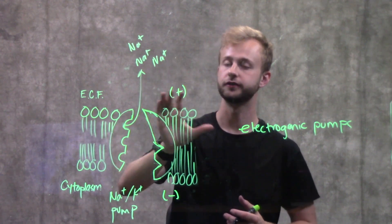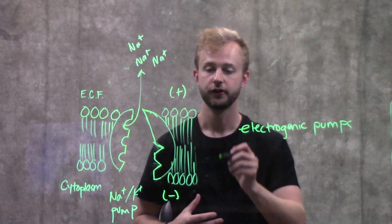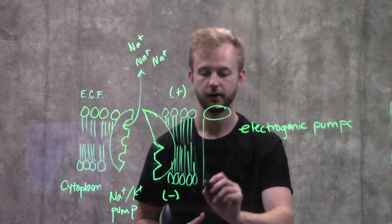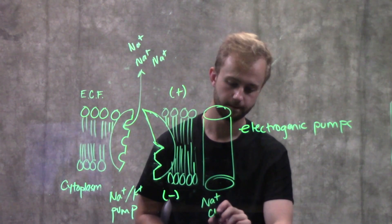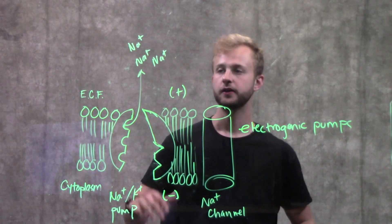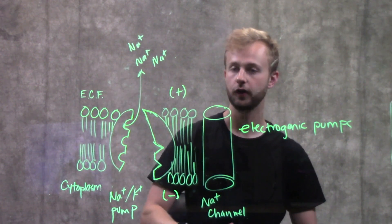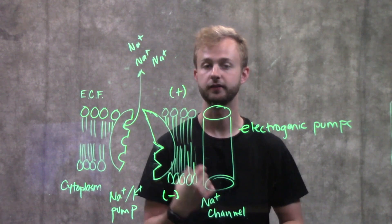So now we have this high concentration of sodium on the outside of the cells. Let's say now that we open up a sodium channel. When we open up a sodium channel, sodium is already going to want to flow down its concentration gradient from high to low.